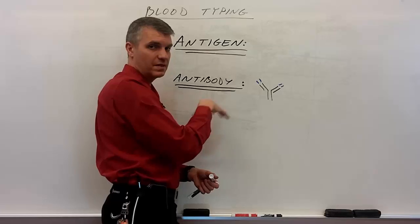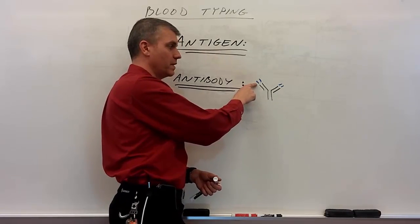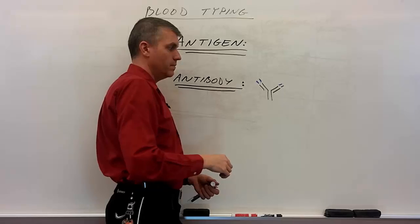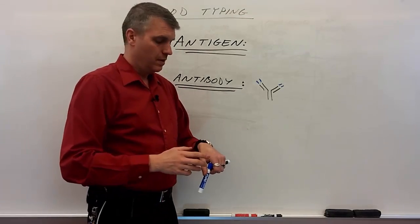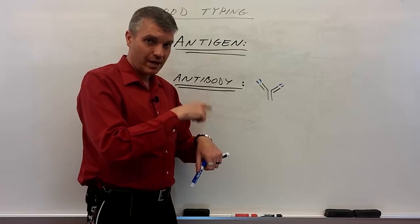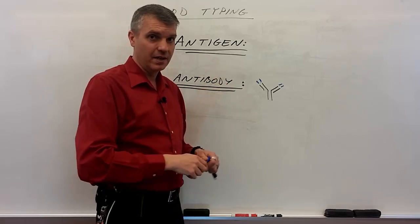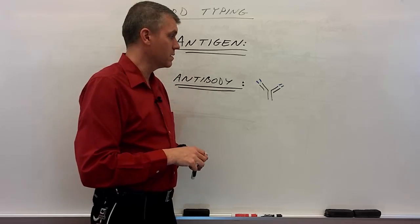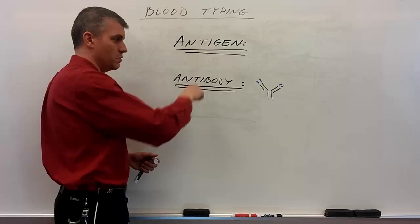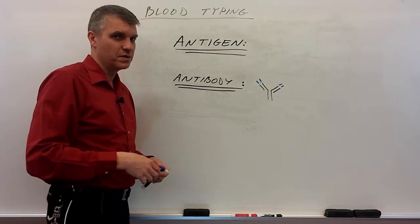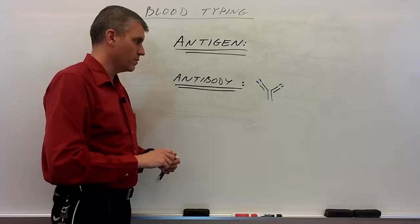That's how antibodies attack aliens — they bind specifically to that alien and cause it a bad day. They either bind and clump, or by binding and covering it they flag that alien for destruction by other parts of the immune system. This is kind of an introduction to the immune system, but it's very important to understanding blood typing.